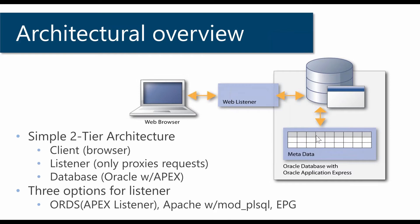It's all stored as metadata in the database, just like your dictionary tables for your schema. If you want to get all of your tables in your schema, you'd run SELECT * FROM USER_TABLES. You can do the same thing for APEX — if you want to get all of your applications, you can SELECT * FROM APEX_APPLICATIONS.